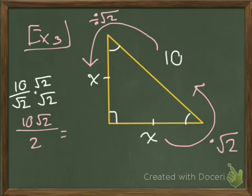So here we end up with what? Can we leave it like that? No, because the 10 and the 2 simplify to 5 and 1, leaving us with 5 rad 2. Now, how does this connect with our original problem? My side lengths are both 5 rad 2, right?